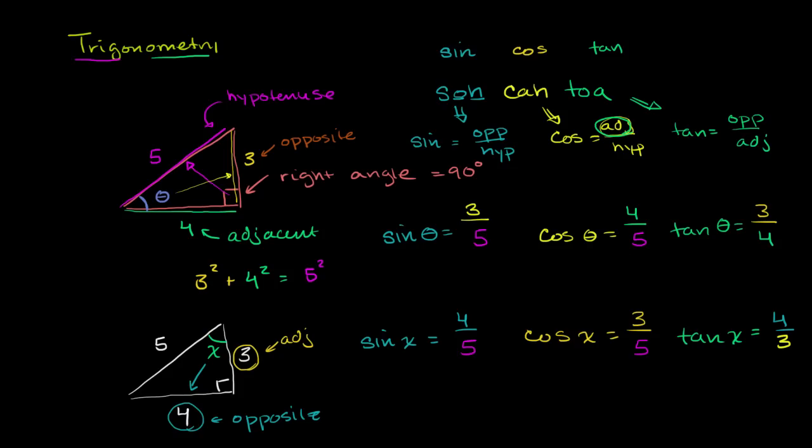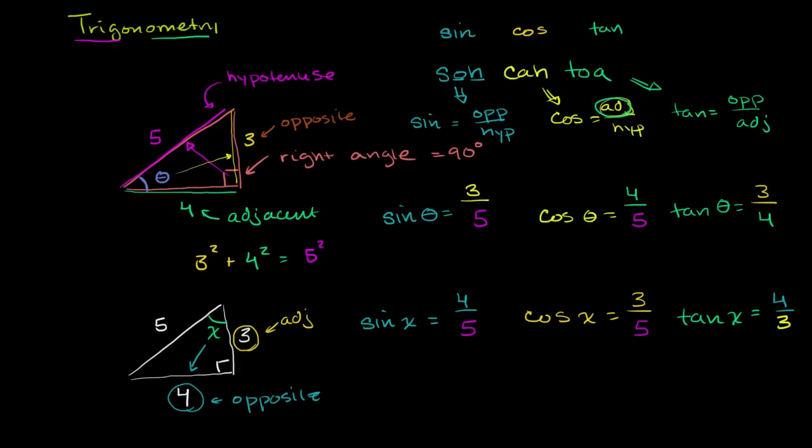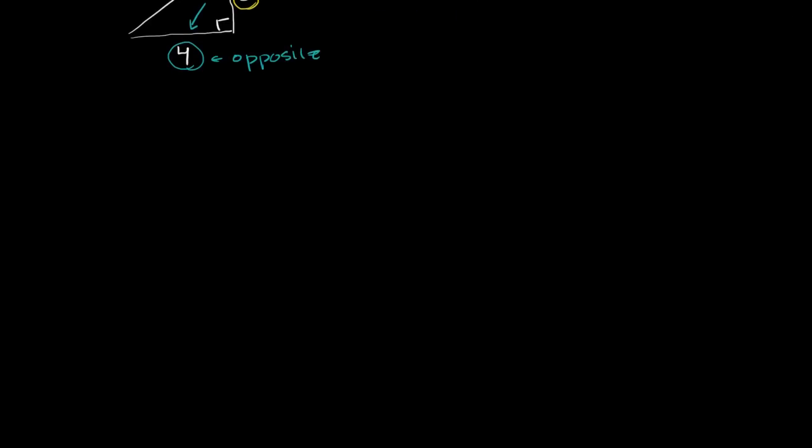Let's do a ton more examples, just so that we make sure we're getting this trig function thing down well. So let's construct ourselves some right triangles. I want to be very clear — the way I've defined it so far, this will only work in right triangles. So if you're trying to find the trig functions of angles that aren't part of right triangles, we'll have to construct right triangles. But let's just focus on right triangles for now.